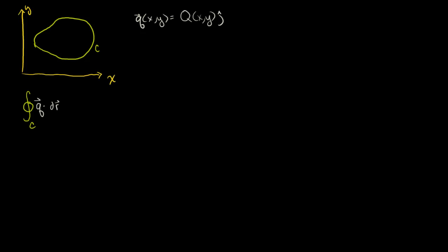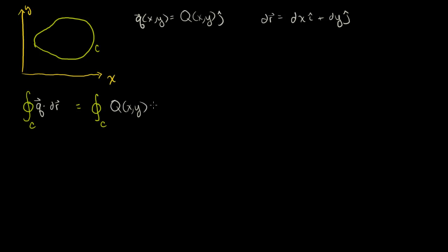We've seen it already — dr can be rewritten as dx times i plus dy times j. So if we take the dot product, this line integral is the closed line integral over C of Q dot dr. Q only has a j component, so 0 times dx is just 0, and then we have Q(x,y) times dy. There was no i component, that's why we lose the dx.